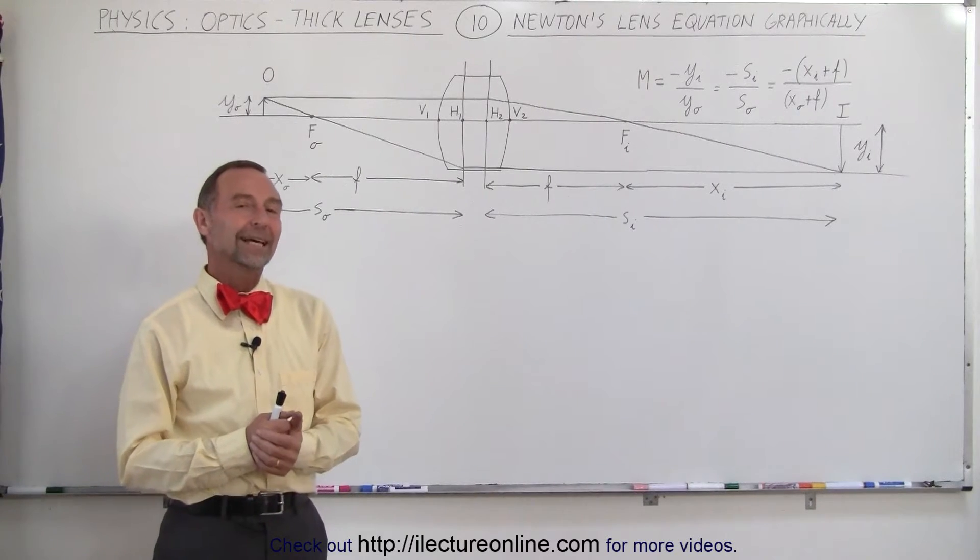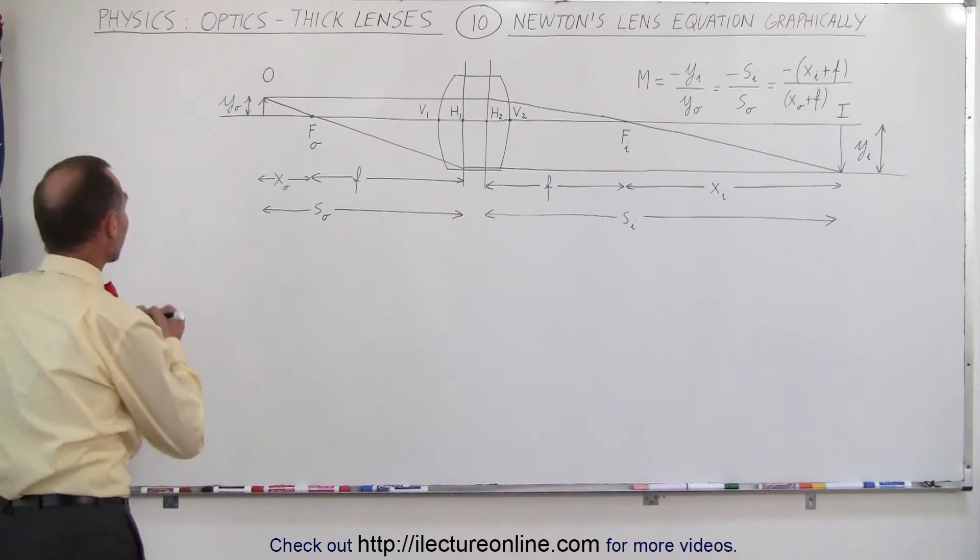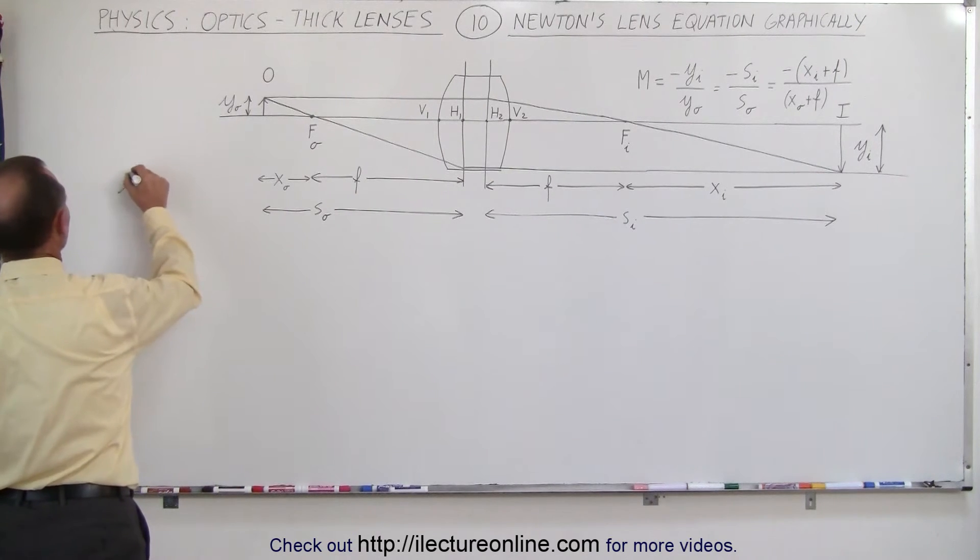Welcome to Electronline. Here we're going to take another look at Newton's lens equation, and remember from the previous video that it was defined as the focal length squared.